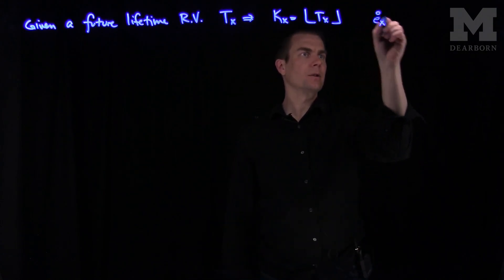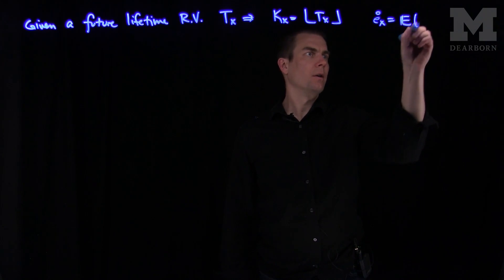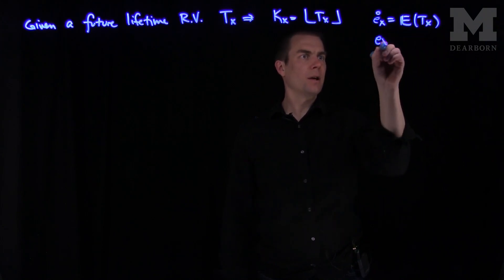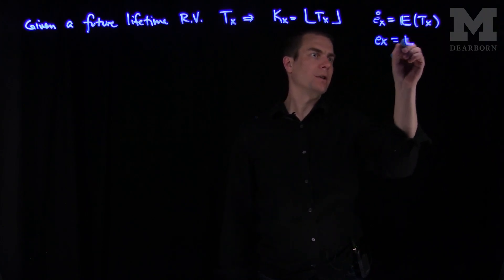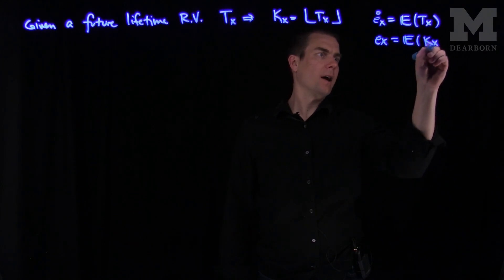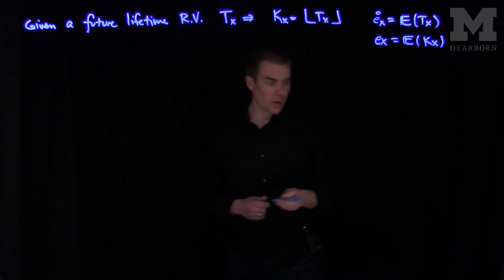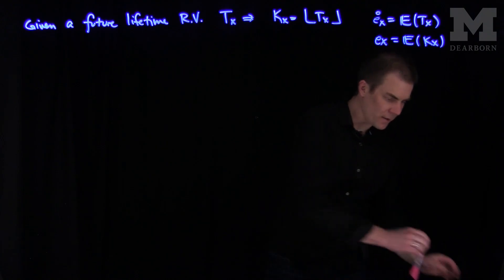And we get two quantities for expected value. We know that ex circle is just the expected value of tx, and we know that ex without a circle is just the expected value of kx. So one is a continuous random variable, one is a discrete random variable.